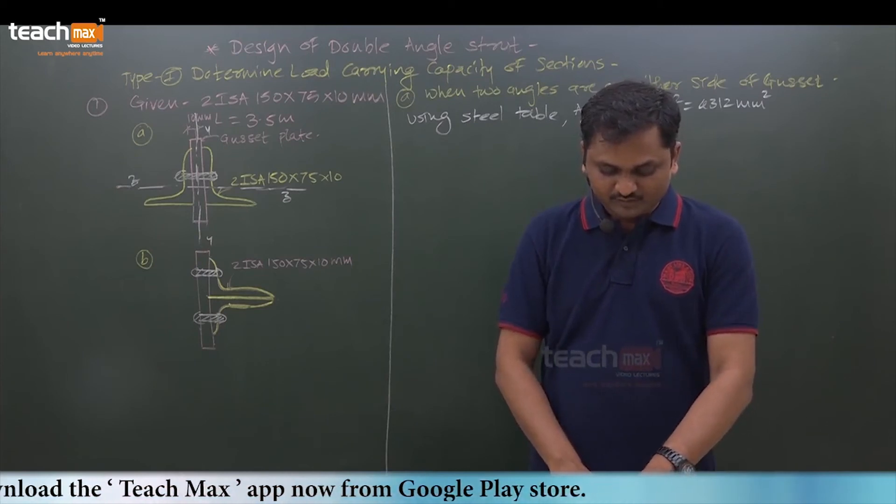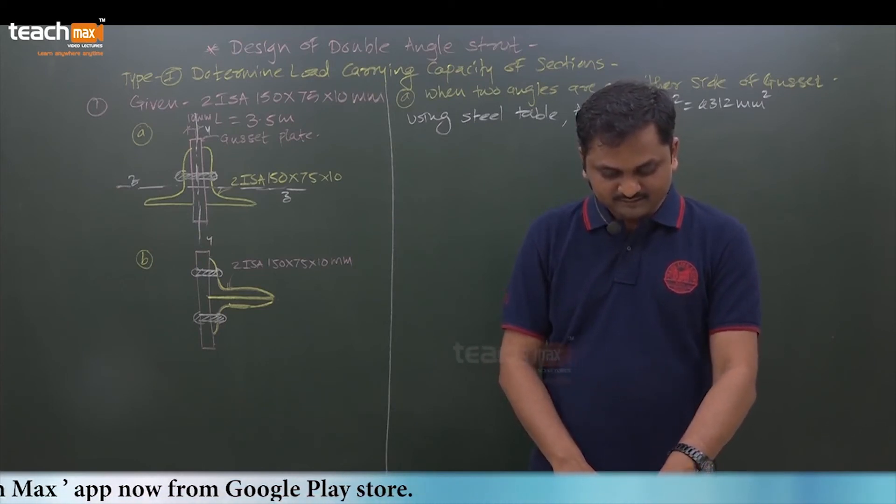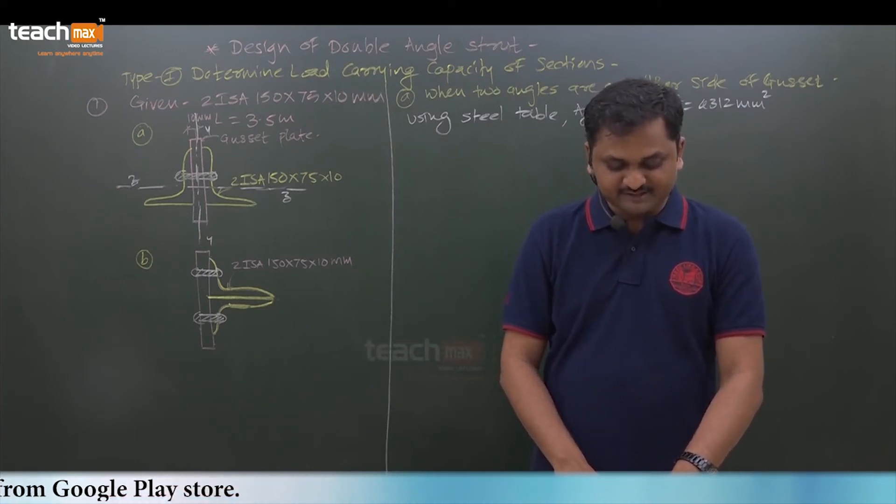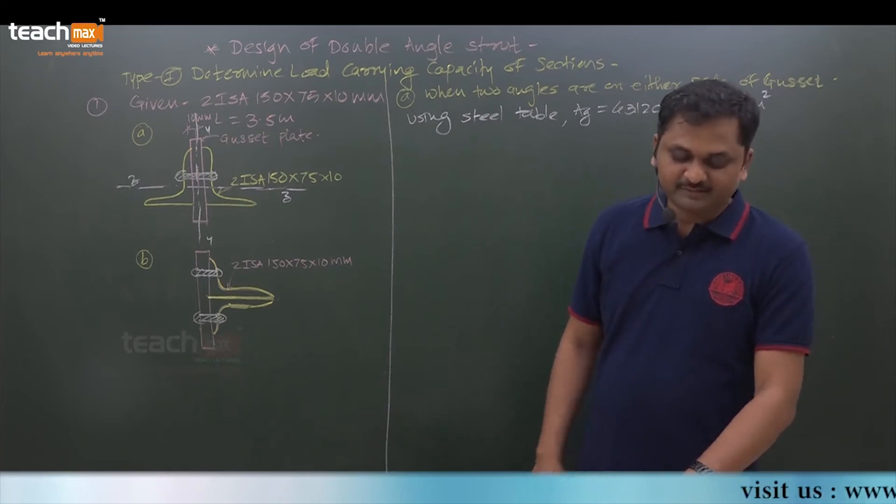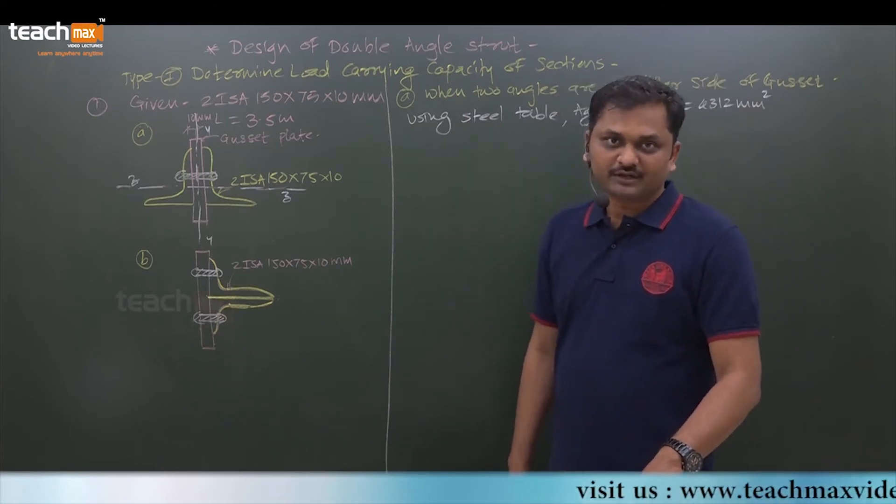So rzz means rxx from steel table. It is 4.81 centimeter, which means 48.1 mm.